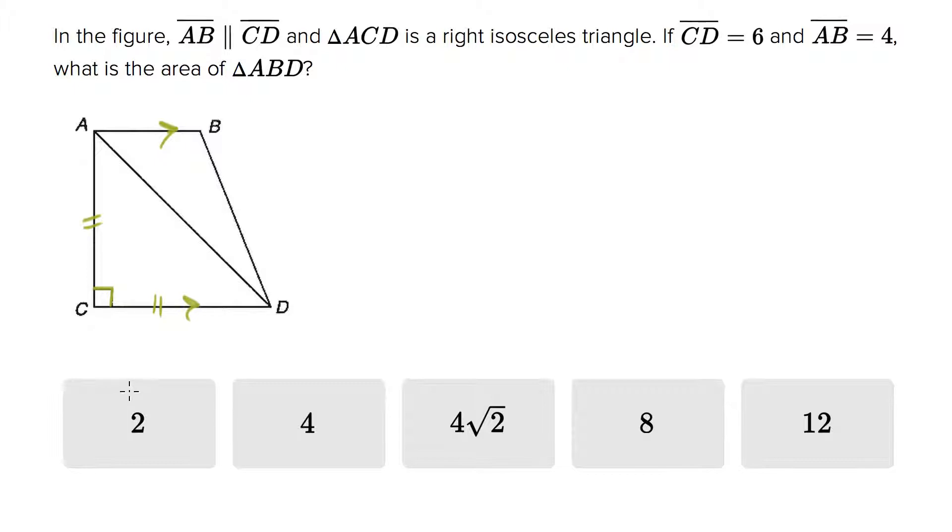And they tell us that CD equals 6. So that has a measure of 6, which means AC has a measure of 6. And that's actually the side that we need. And they tell us AB has a length of 4, what's the area of ABD?